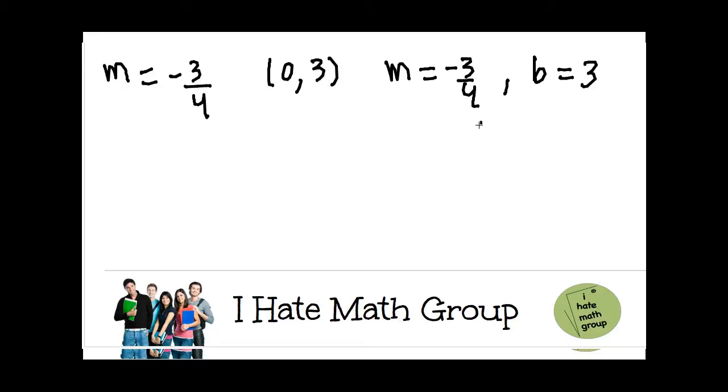Remember, when you have y equals mx plus b, the b is the value of y when x equals 0. And look, it's already given. So I'm going to go ahead and plug it in. y equals negative 3 over 4x plus 3.